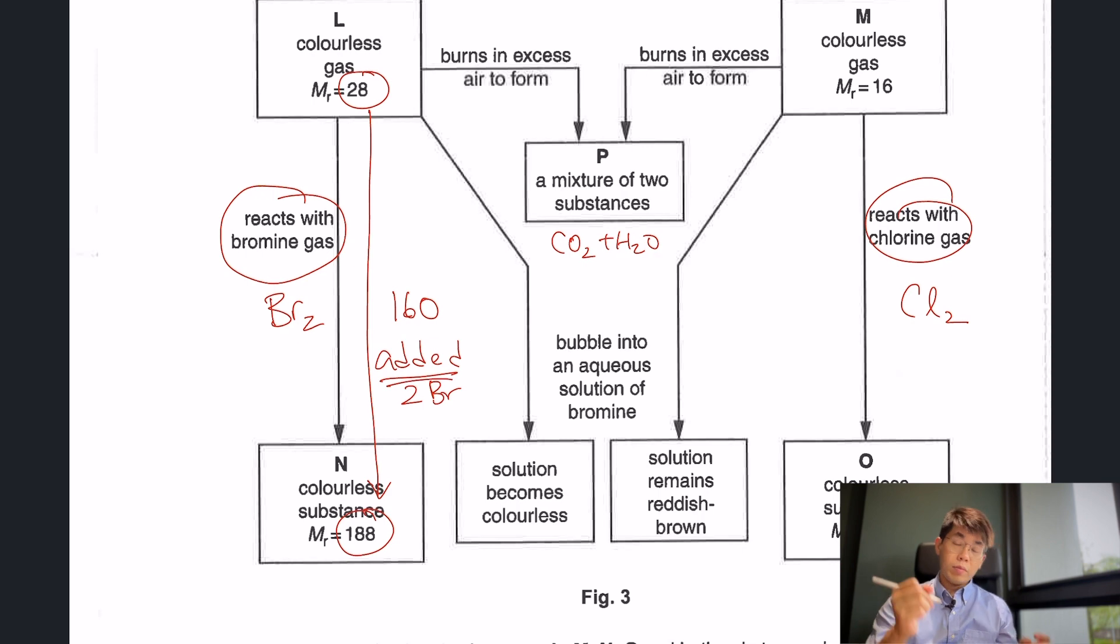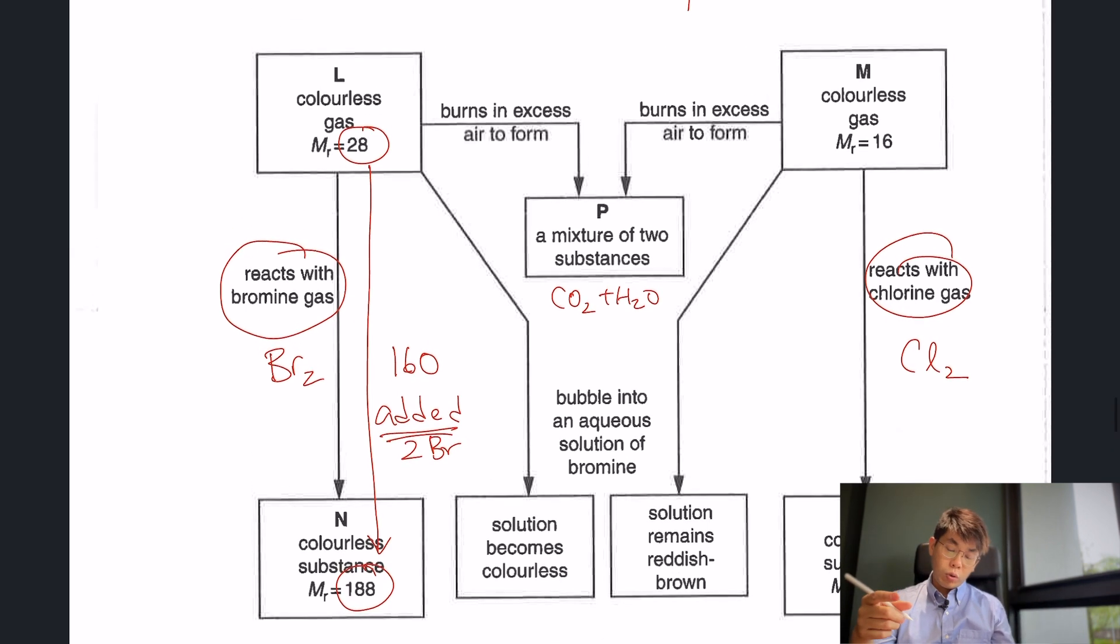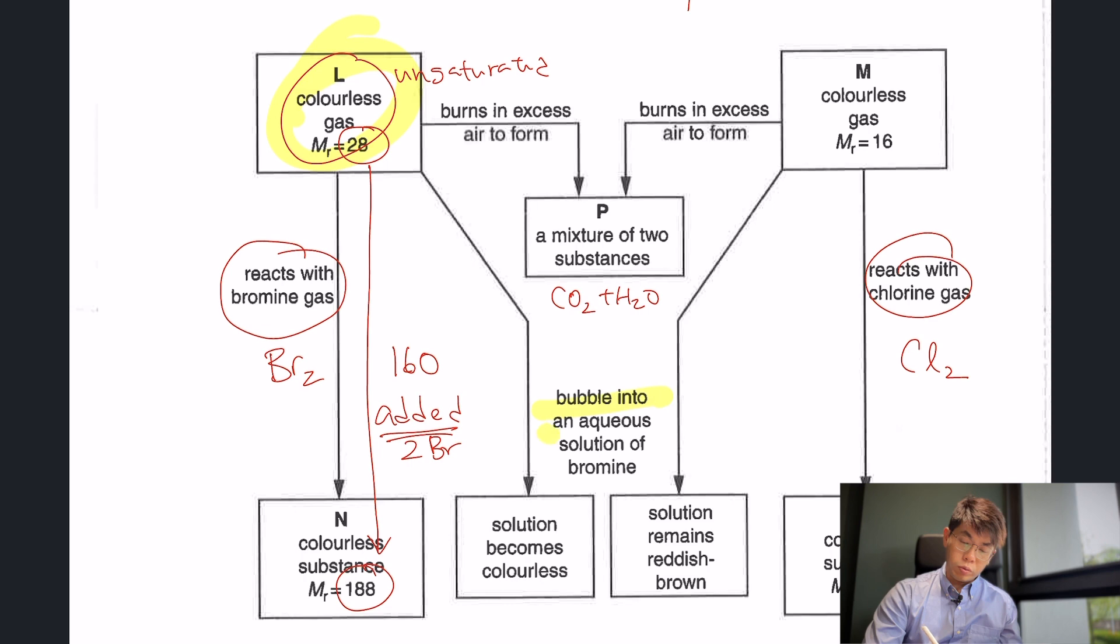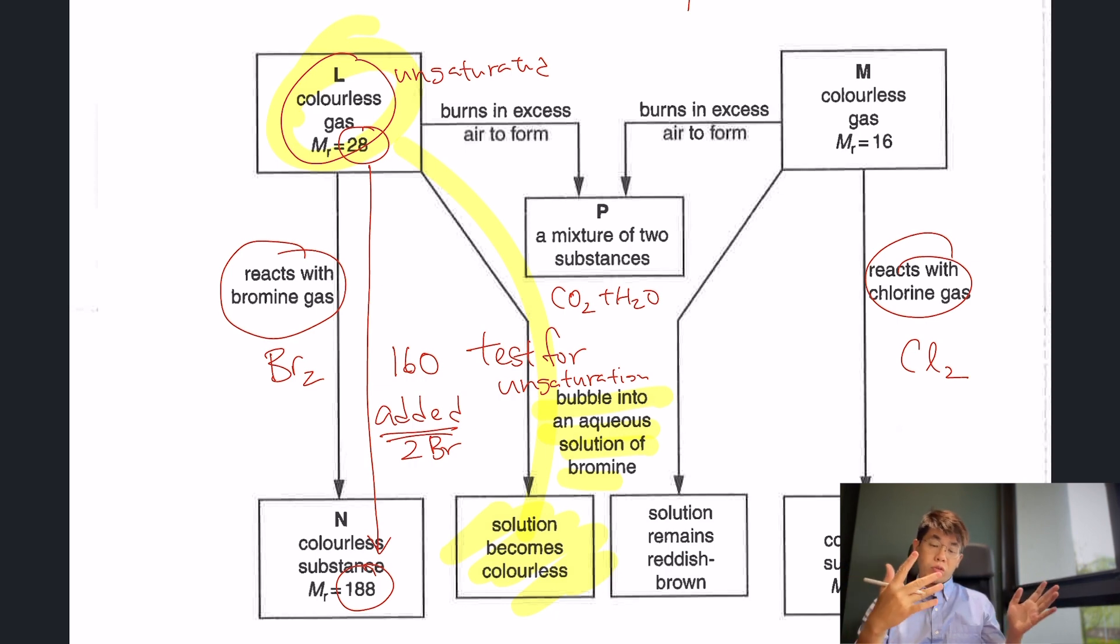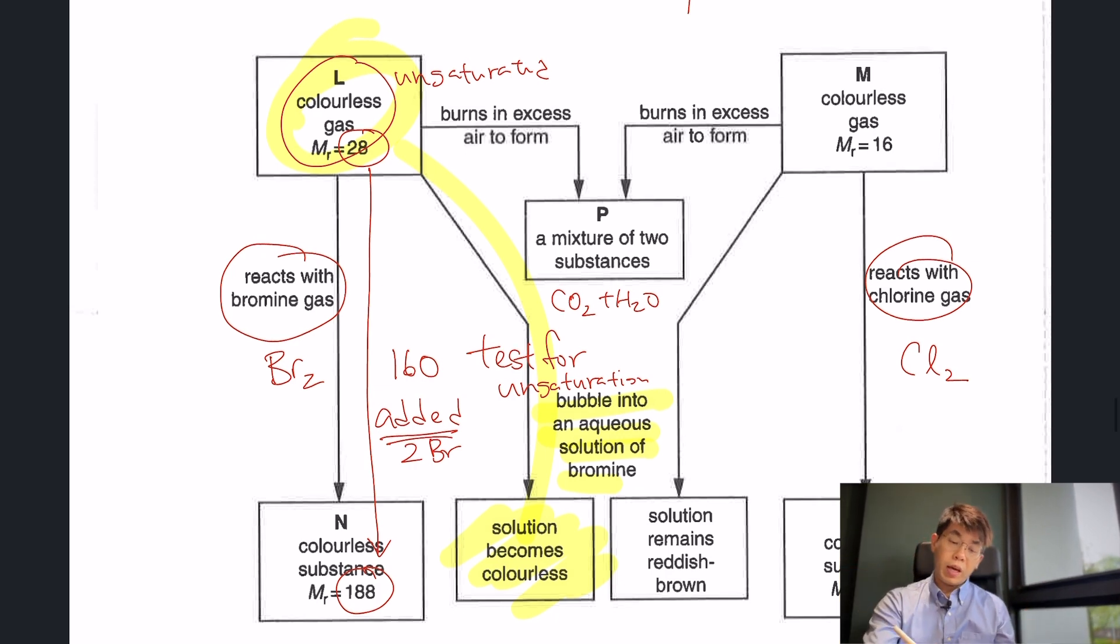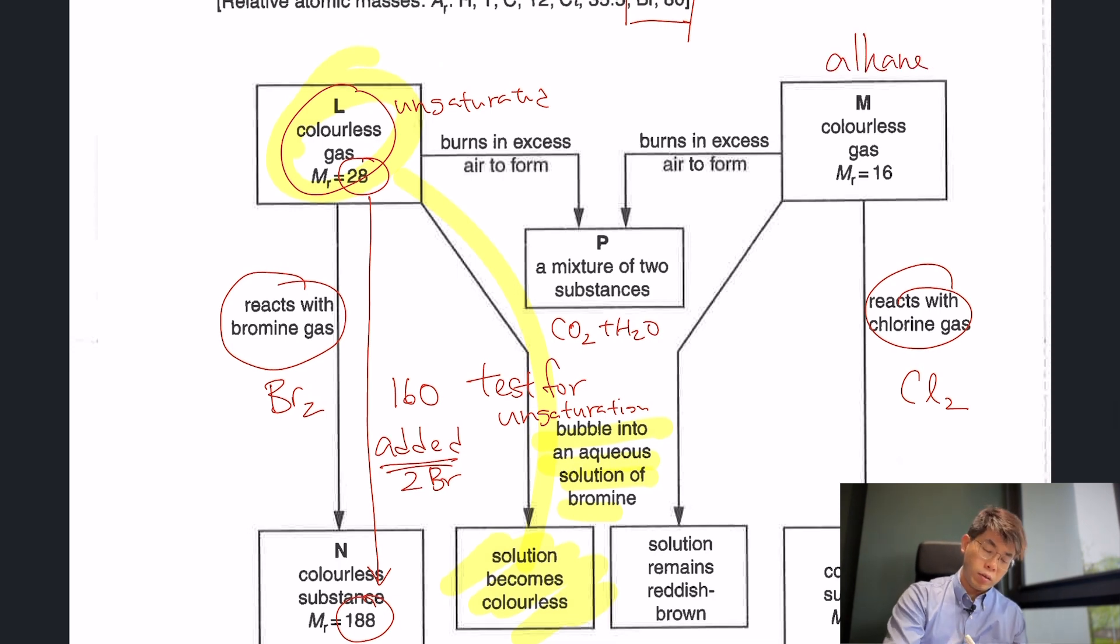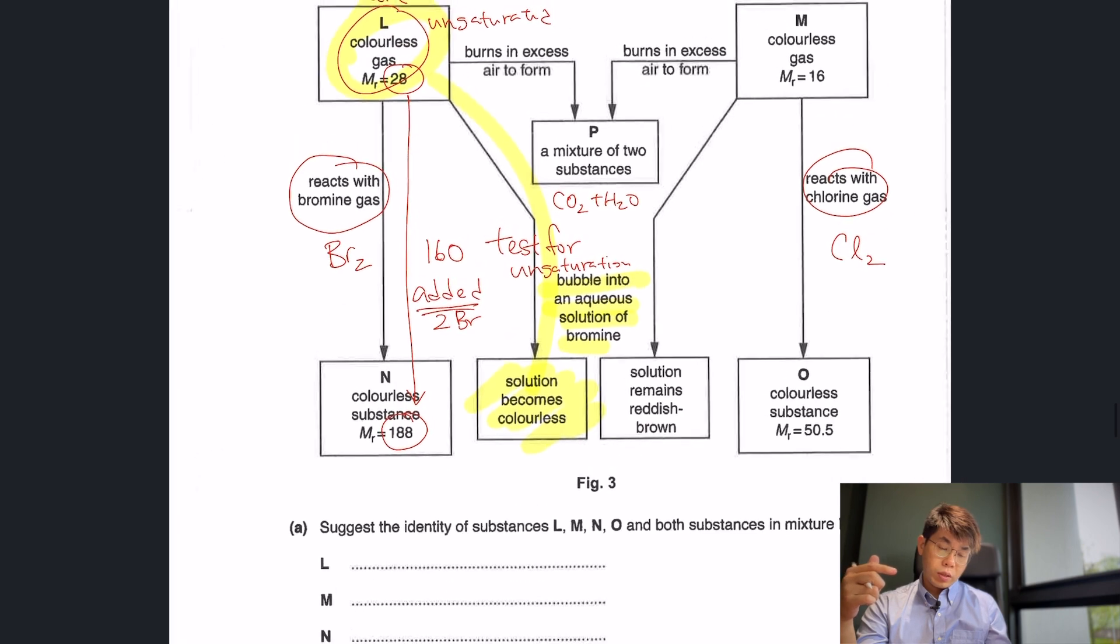That means we have added, means it's an addition reaction. So this would show that this is actually an unsaturated compound. And this will most likely be the alkene. This is further proven by this line over here. When L is bubbled into aqueous solution of bromine, the solution becomes colorless. So this is the test for unsaturation. L passed the test for unsaturation, so it's unsaturated. But M is not saturated. So M is an alkane, and L is an alkene.